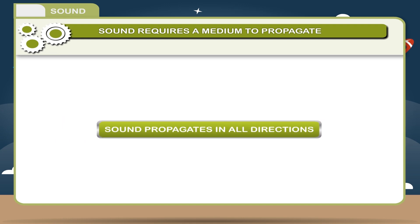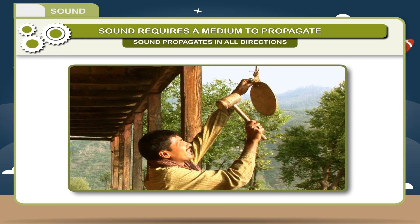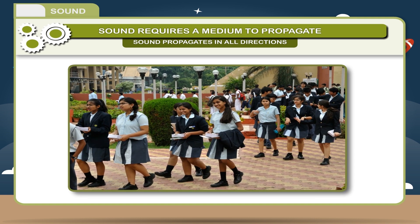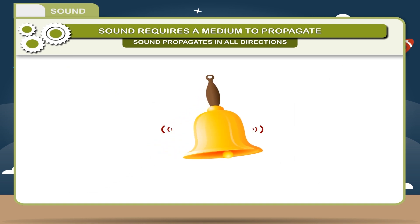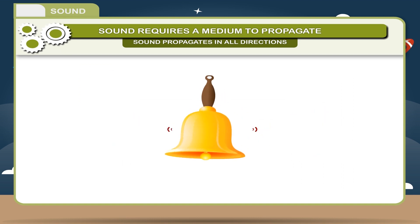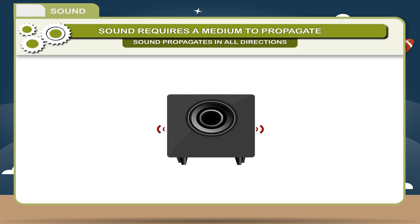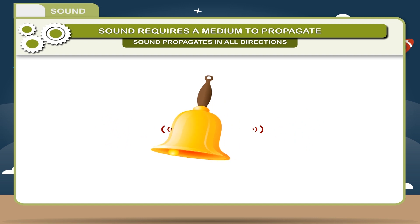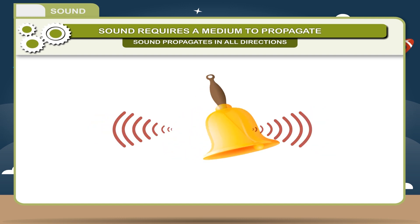Sound propagates in all directions. In the morning, when a school bell rings, it is heard by all the students, although they are not present in the same place — they are in different places. It means sound travels in all directions. Its loudness depends upon the distance from source to observer. The louder the sound, the greater is the distance covered by it.